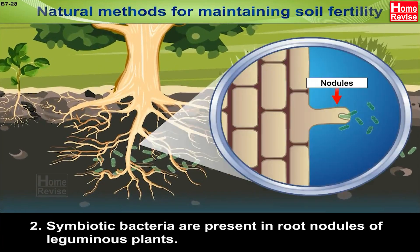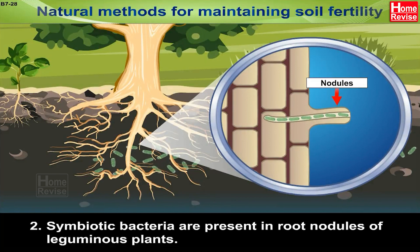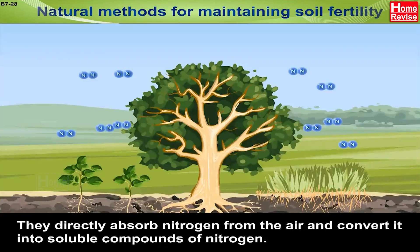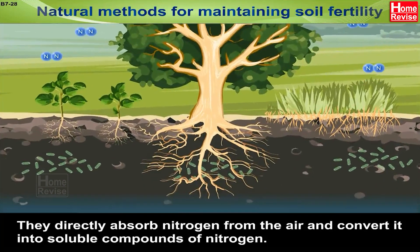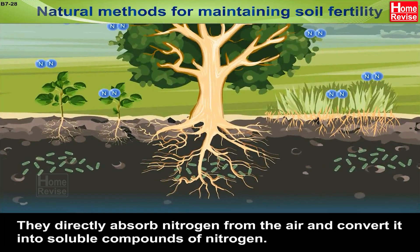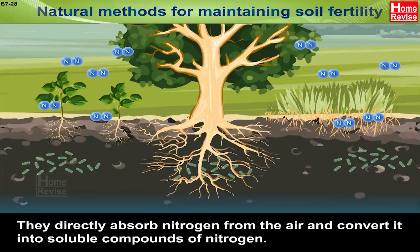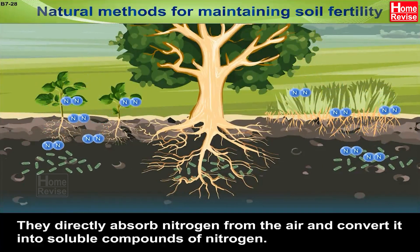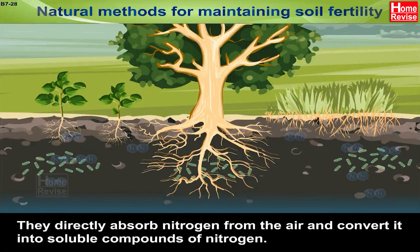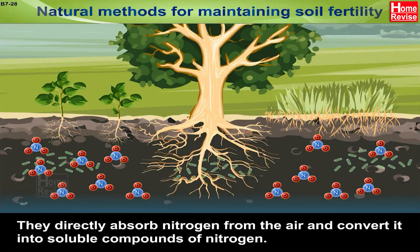Symbiotic bacteria are present in root nodules of leguminous plants. They directly absorb nitrogen from the air and convert it into soluble compounds of nitrogen.